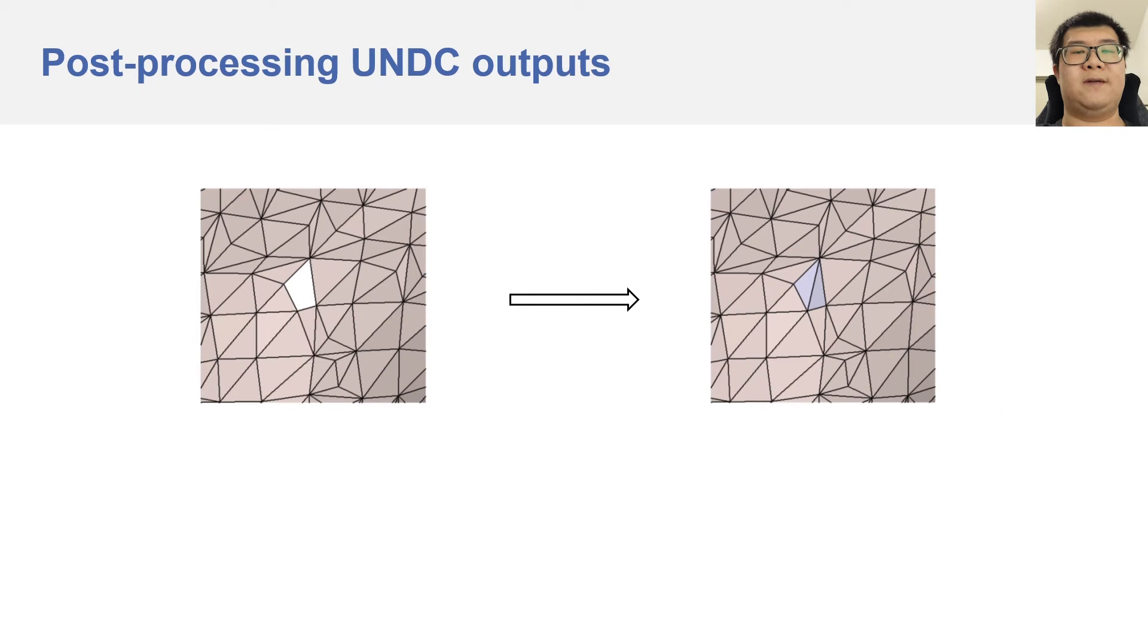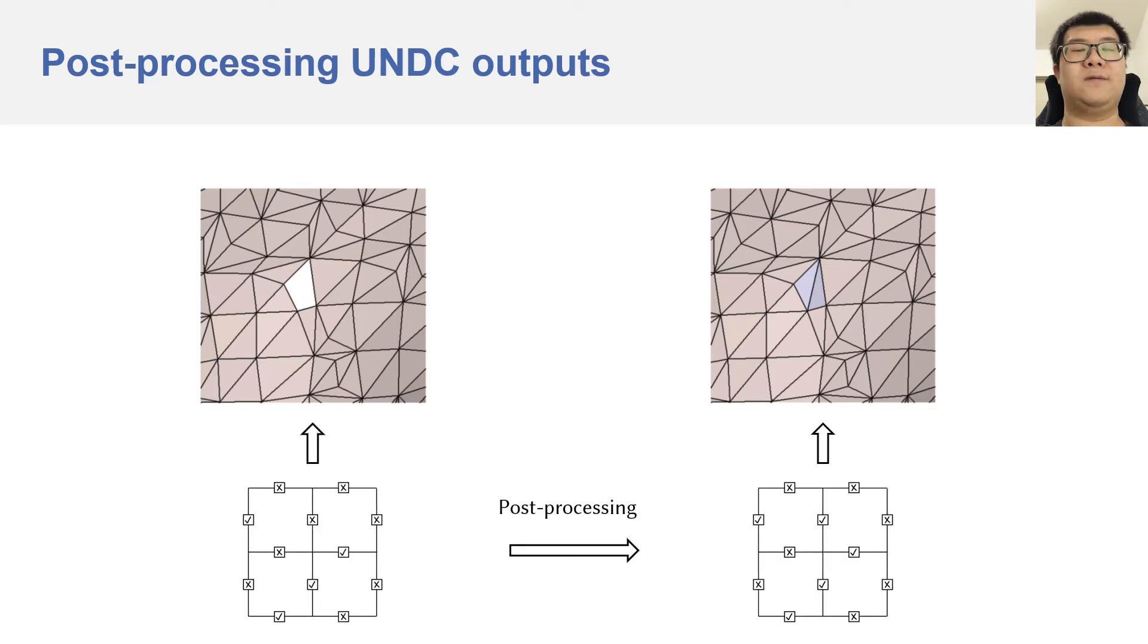For UNDC, there is a post-processing step. Because UNDC can take unsigned inputs and can produce open surfaces, it could make mistakes and generate small holes in the output mesh. We use a simple post-processing step to close these holes. This step is performed directly on the output grid of intersection flags, before converting the grids into the output meshes.